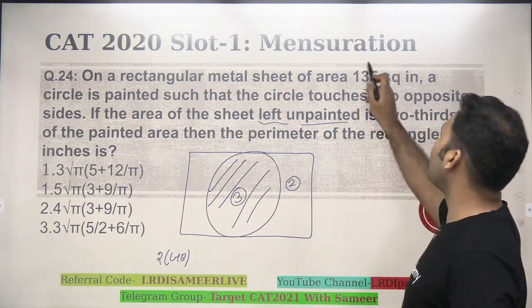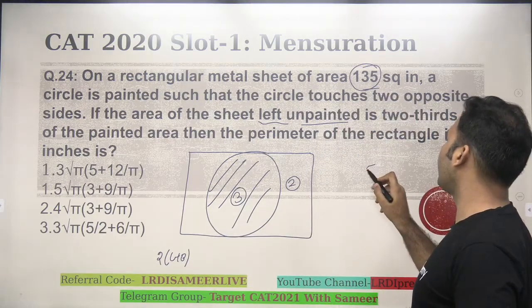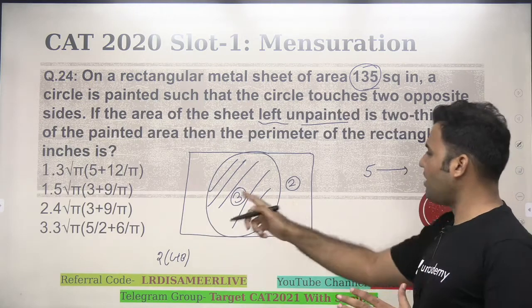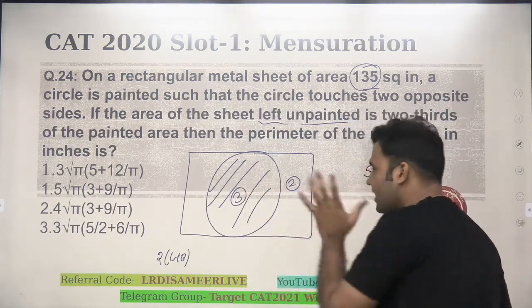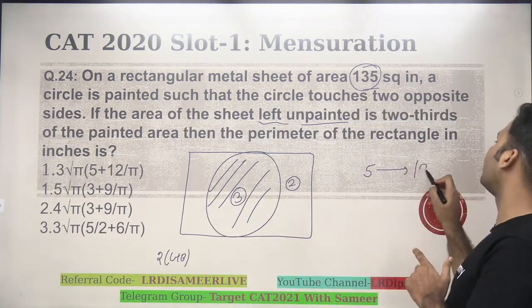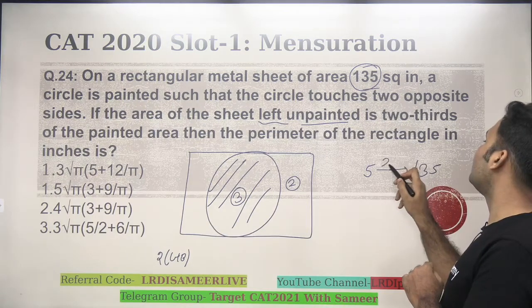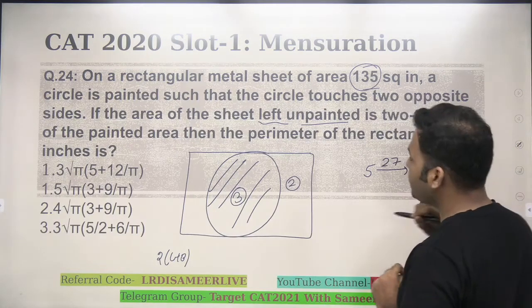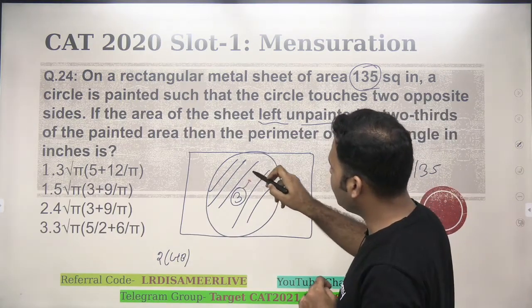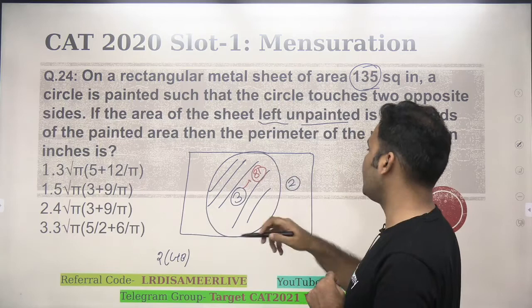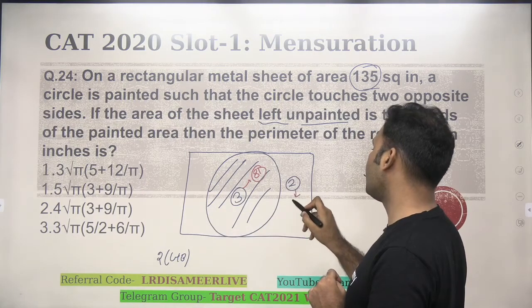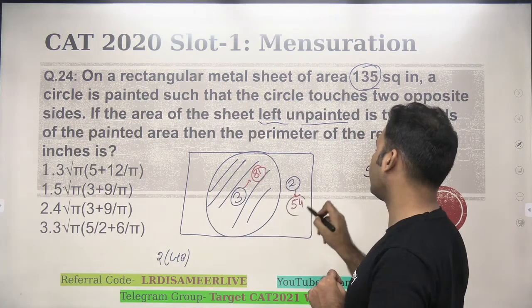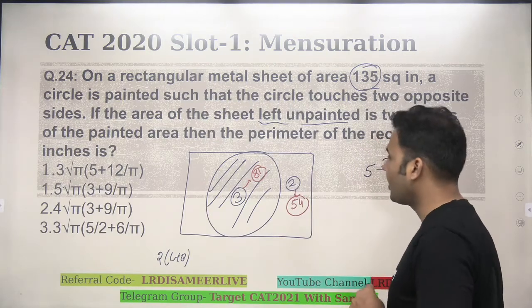But the whole sheet area is given to you as 135. So, if I am assuming the total sheet area is to be 5 and it is given as 135, which you can see is 27 times, can I say the area of the sheet which is painted would be three into 27, that is 81, and this would be two into 27, that is 54.